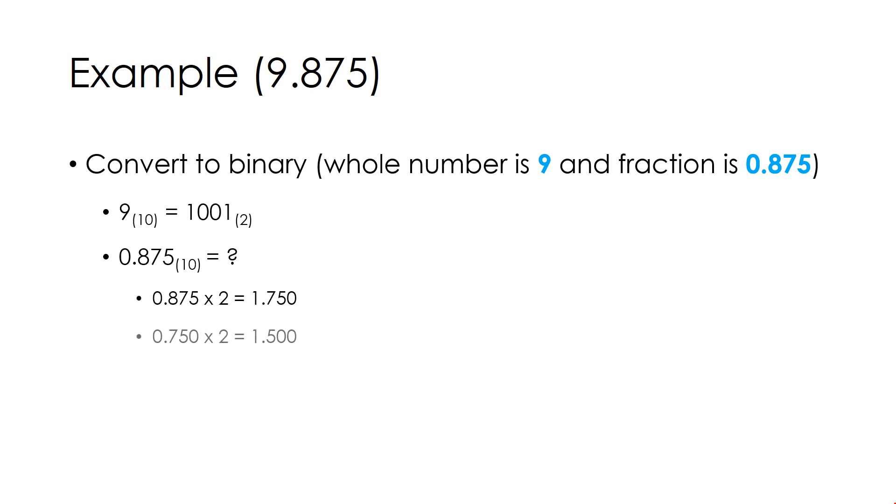So again we multiply by 2 and get 1.500 where fraction is 0.500. Again multiply by 2 and get 1.000 where fraction is 0.000, which is where we need to stop.